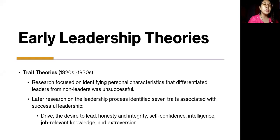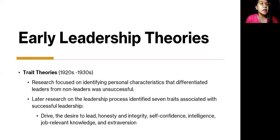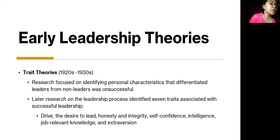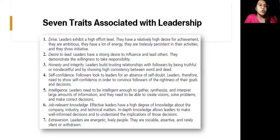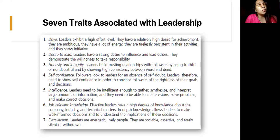Trait theories emerged during the 1920s and 1930s and focused on identifying personal characteristics that differentiated leaders from non-leaders. The early research was unsuccessful, but later research identified seven traits associated with successful leadership. The trait theory essentially focuses on the idea that a leader is born — meaning you are born with certain characteristics because you are a born leader.